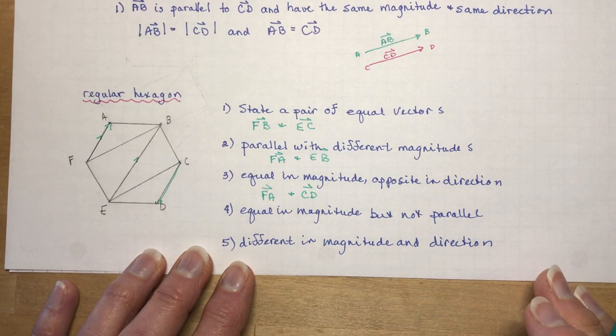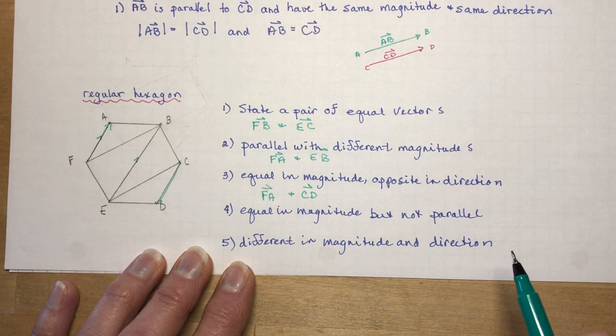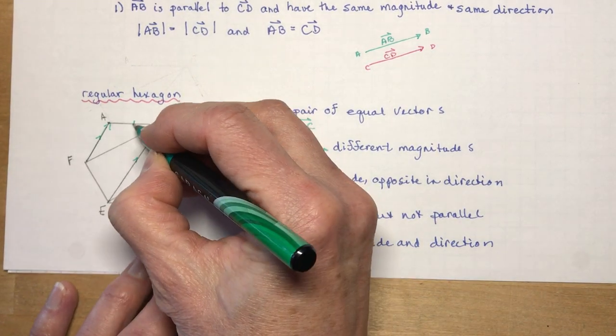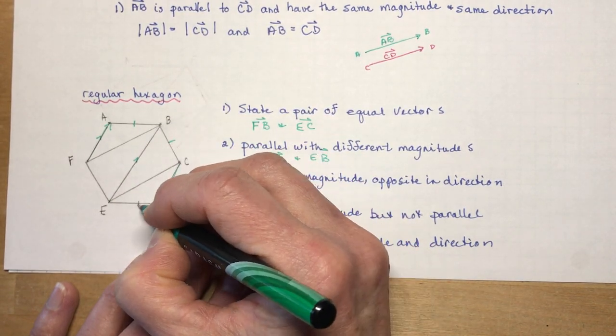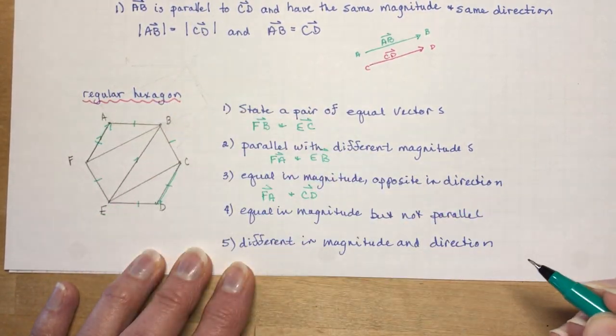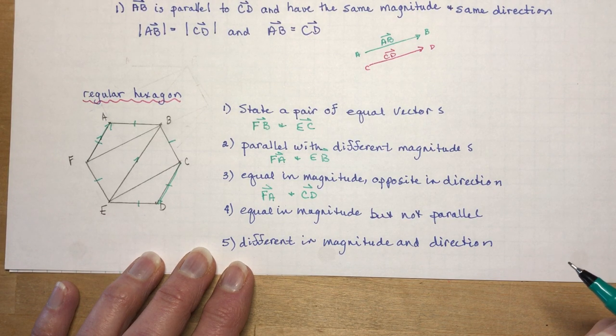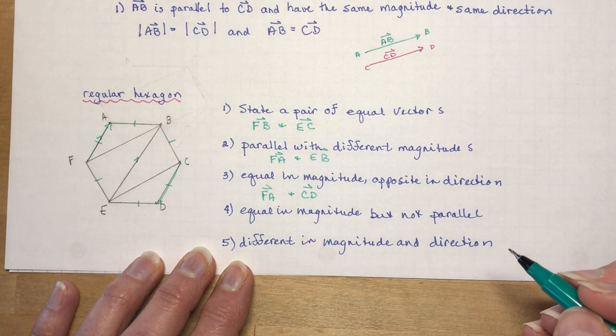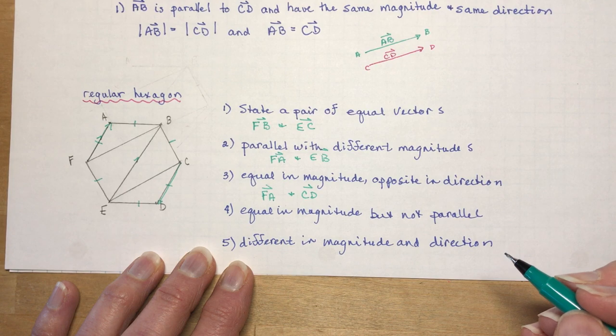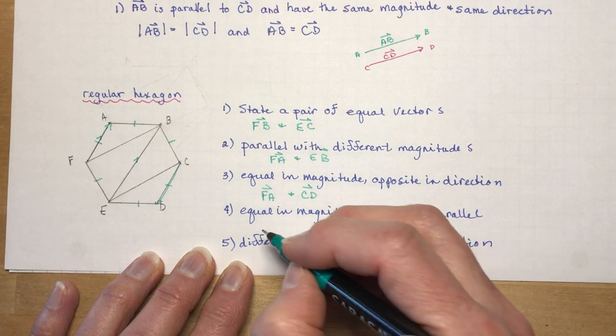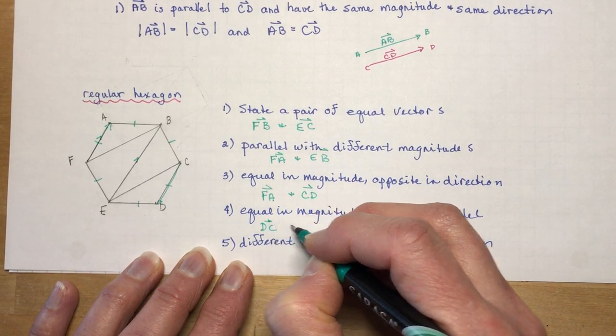Equal in magnitude but not parallel. Well there's lots of those because we know if this is a regular hexagon, all these side lengths are the same length, so they have the same magnitude. Equal in magnitude but not parallel, let's pick DC and BC. There's lots to choose from.